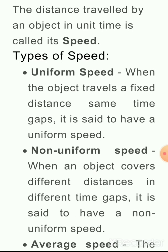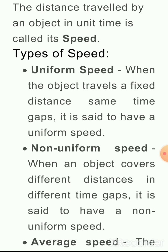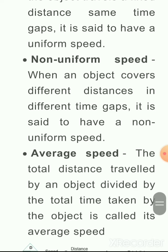Speed भी दो तरह के होते हैं: uniform speed and non-uniform speed. Uniform speed: when the object travels a fixed distance in the same time gap, it has a uniform speed. Non-uniform speed: when an object covers different distances in different time gaps, it is said to have a non-uniform speed. जब कोई object different distance को different time gap में cover करता है, that is called non-uniform speed.